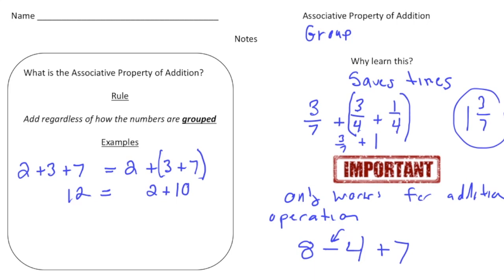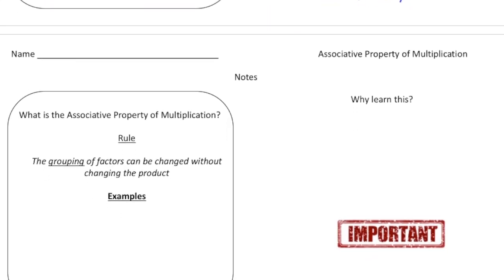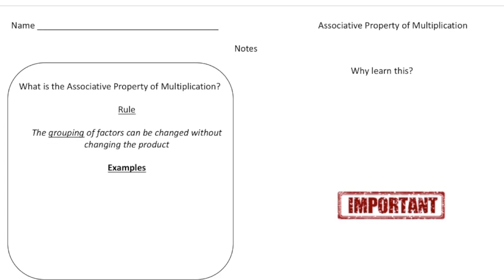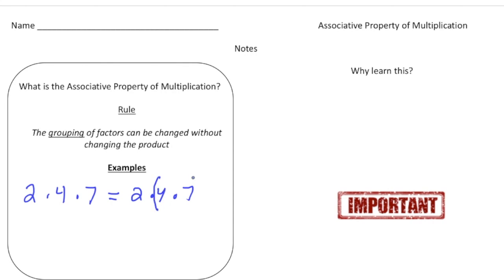Now let's talk about the associative property of multiplication. This is very similar to the associative property of addition — it's about grouping symbols. The rule says the grouping of factors can be changed without changing the product. So if we have two times four times seven, because all we're doing is multiplying, I could put parentheses around the four and seven, do that first, and then multiply by the two.